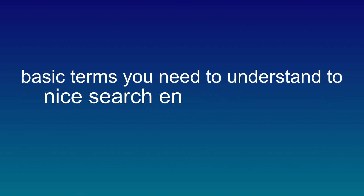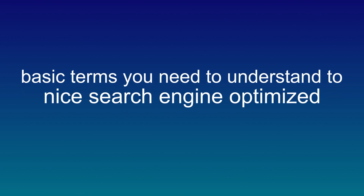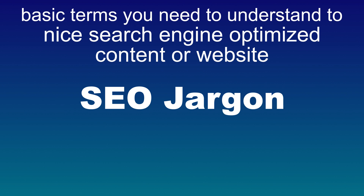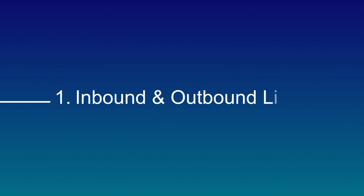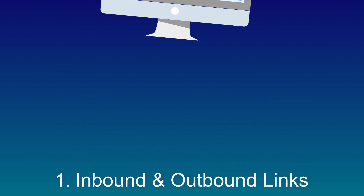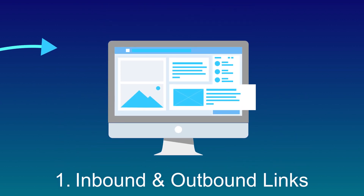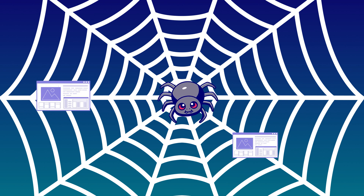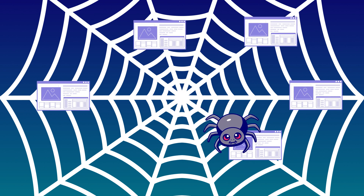There are several basic terms you need to understand to make search engine optimized content or a website — called SEO jargon. SEO jargon contains: one, inbound and outbound links. Hyperlinks that link internal pages or posts within your website are called inbound links, and the ones that take you to another web page are called outbound links.